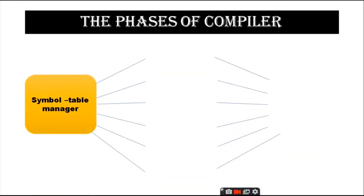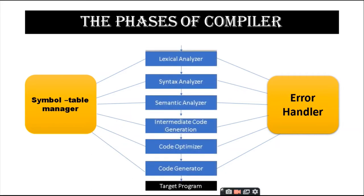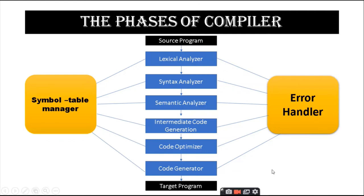The phases of a compiler — there are basically six phases. The whole pipeline includes: lexical analyzer, syntax analyzer, semantic analyzer, intermediate code generation, code optimizer, code generator, and target program, alongside a symbol table manager. We will discuss each in detail.